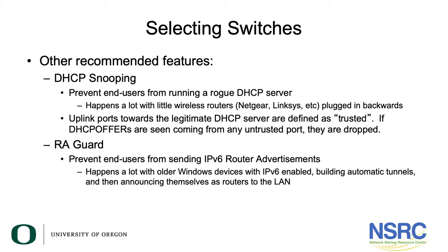These LAN ports are intended for home users to plug in their devices and get an IP address so they can use the internet. You don't want these routers connected into your campus network, and you don't want the DHCP server that runs in these little routers to be visible to anyone. DHCP snooping allows the uplink ports towards the legitimate DHCP server to be trusted and all other ports to be marked as untrusted. If DHCP offers arrive on any of these untrusted ports, they are immediately dropped, protecting the campus network from any unauthorized DHCP servers.